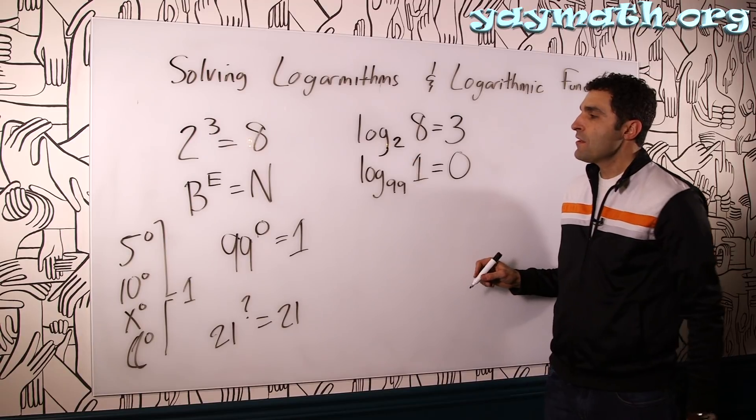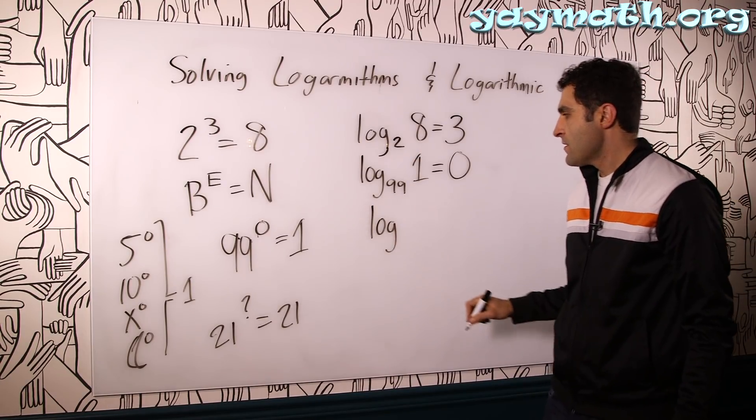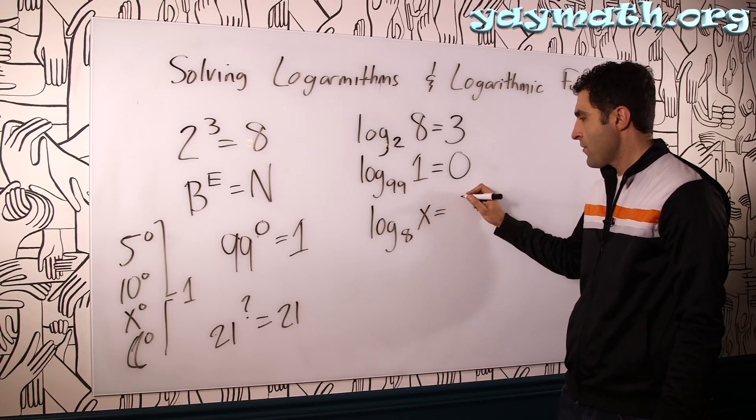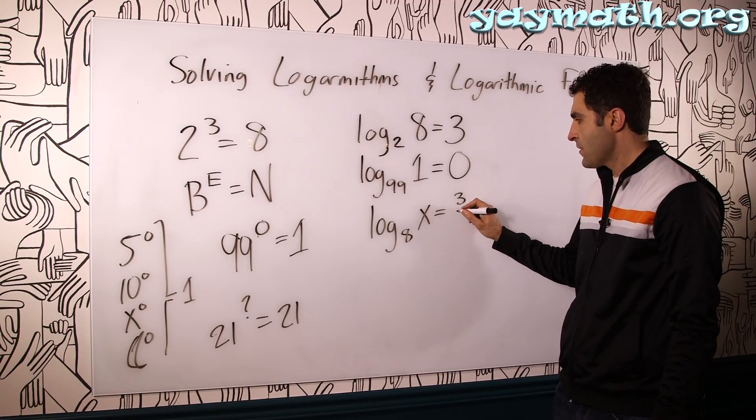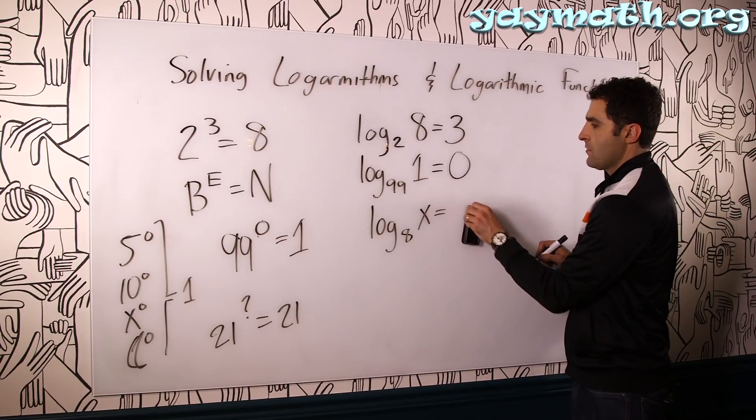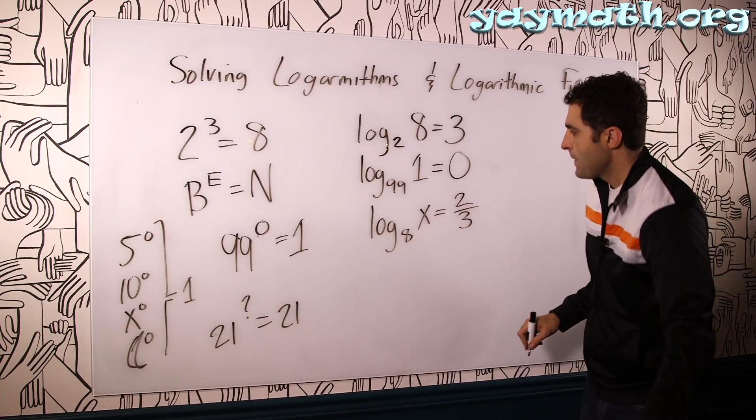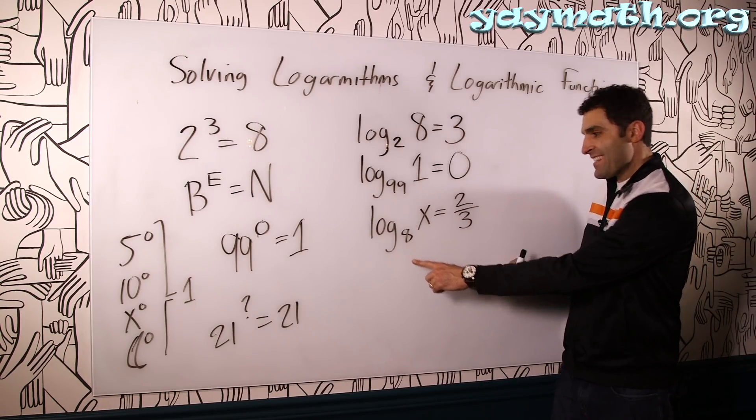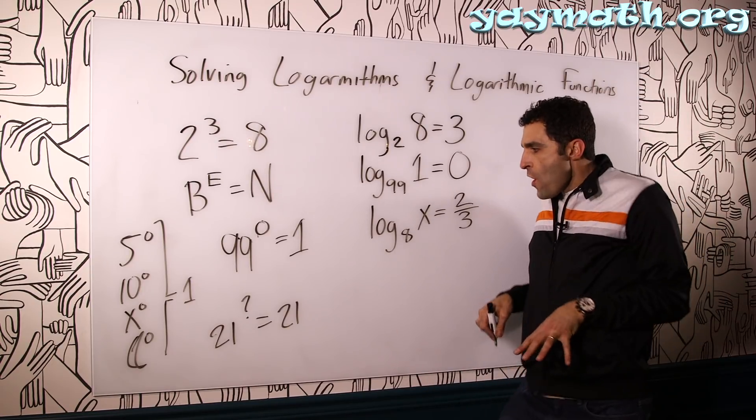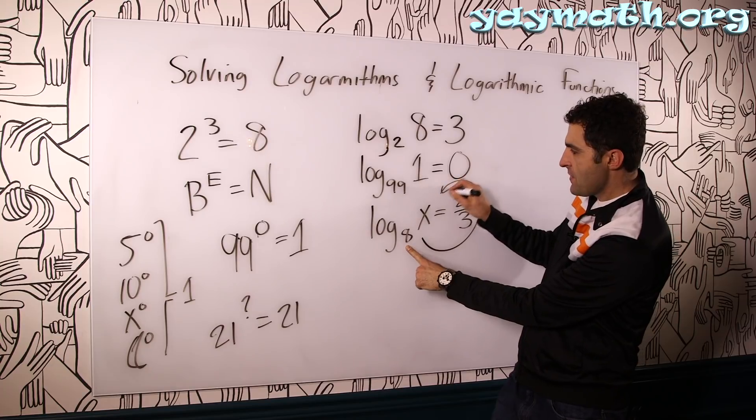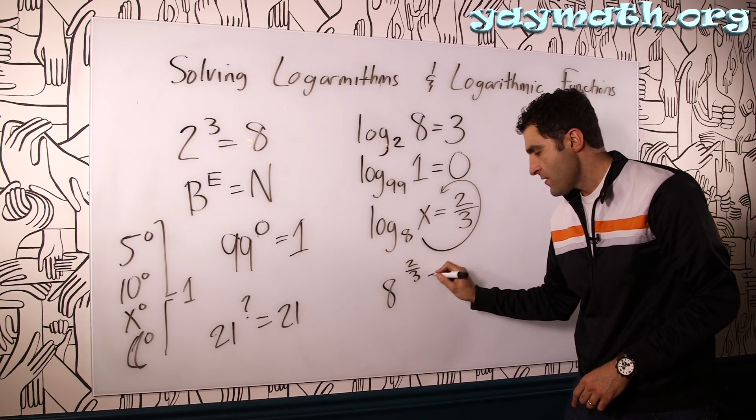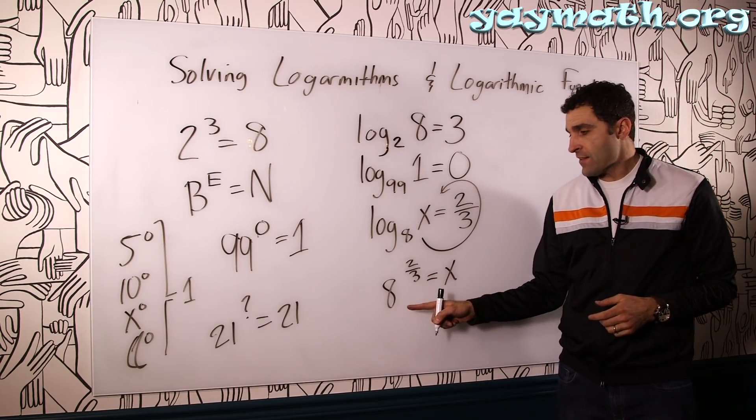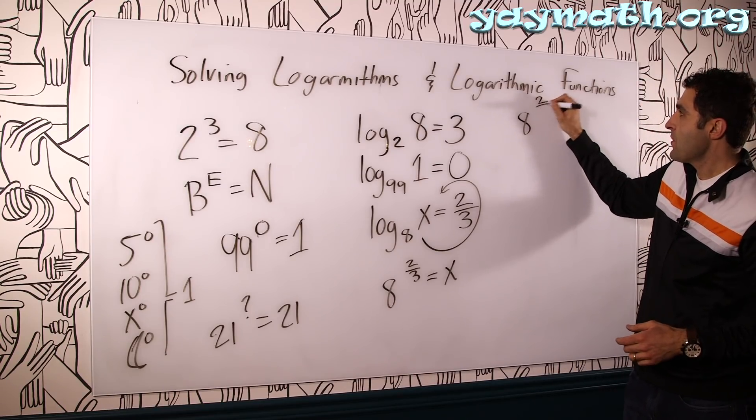So let's use this to solve some logarithmic functions. Let's try something like this. Let's go log base 8 of x equals 2 over 3. That could be cool. So let's turn this into an exponent, and we can see what's going on inside. Snail it! 8 to the 2 thirds is x.